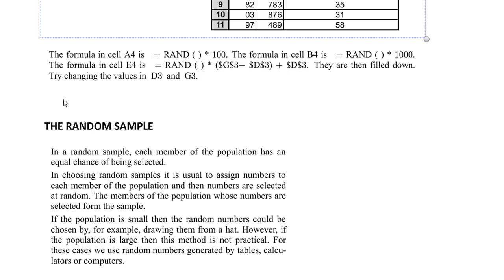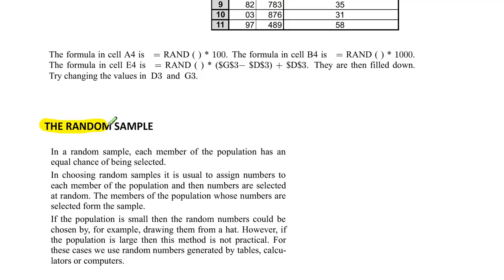This is now a very important part for you to notice. I'll get a highlighter out and we'll work through these notes together. This is called the random sample. In a random sample, each member of the population has an equal chance of being selected. So if you're going to select a sample from a population, the people in that population have all got an equal chance of being selected — there will be no bias. In choosing random samples, it is usual to assign numbers to each member of the population and then select the numbers randomly. The members of the population whose numbers come up form the sample.